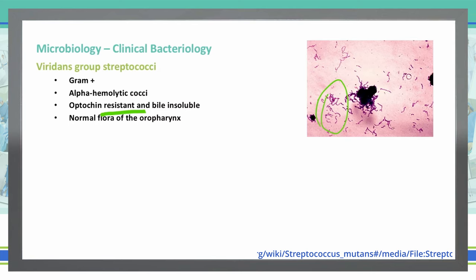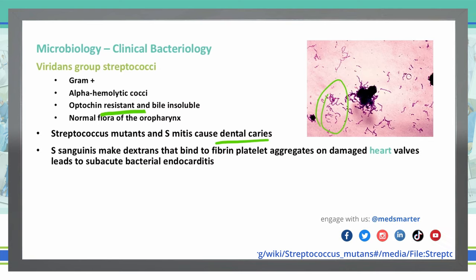It only becomes problematic when it gets into places it's not supposed to be. A couple of the viridans group species are Streptococcus mutans and Streptococcus mitis — if they get into infection areas in the teeth, they can cause dental caries. Strep sanguinis makes dextrans that bind to fibrin platelet aggregates on damaged heart valves, which leads to bacterial endocarditis or subacute bacterial endocarditis, by making its way into the bloodstream during some sort of procedure.